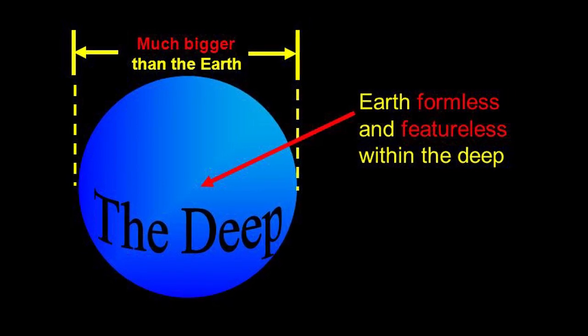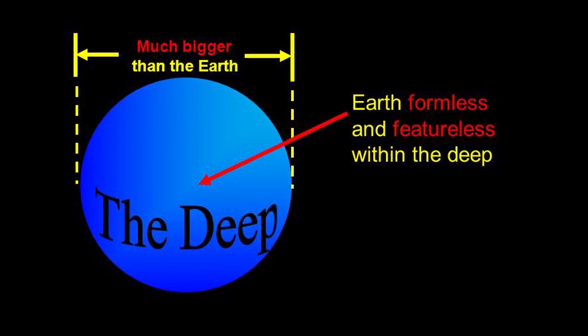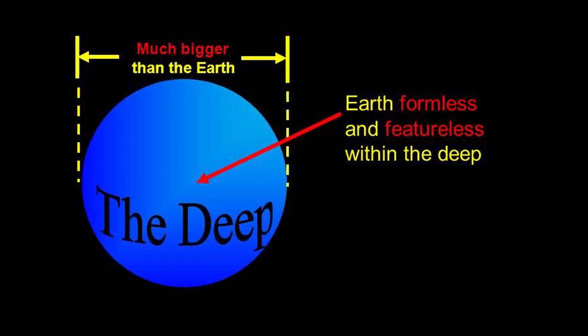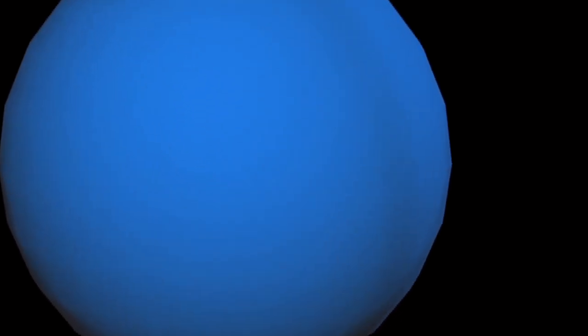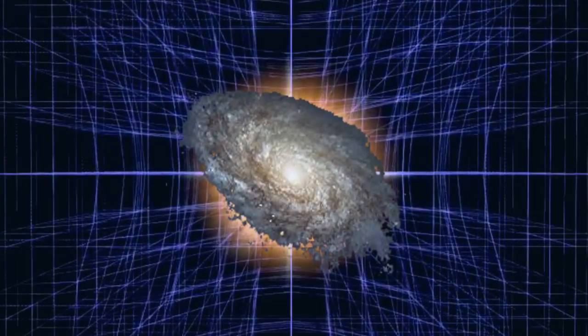this mass of water distorted space and time enough to where everything deep within it actually experienced an extremely slow flow of time, specifically Earth. On the second day, when God separated the waters above from the waters below, he created a vast expanse between them which Humphreys calls the firmament, or the heavens.